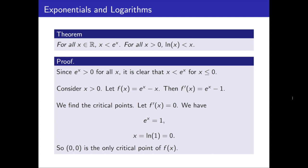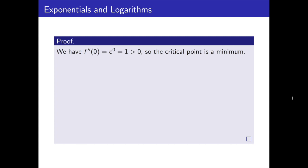So 0, 0 is the only critical point of this function. Now we have a critical point, but the next thing we generally want to know is what type is it. So we take the second derivative, which is e to the power x, we evaluate this at the critical point, 0, and we get 1. So that means the critical point is a minimum.